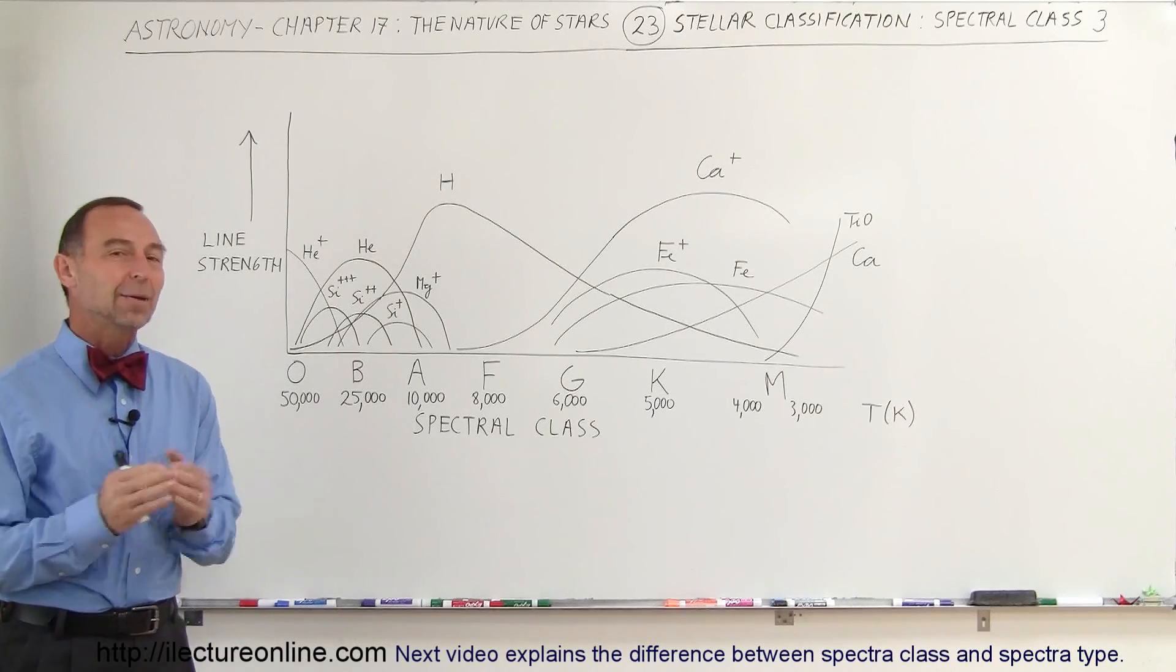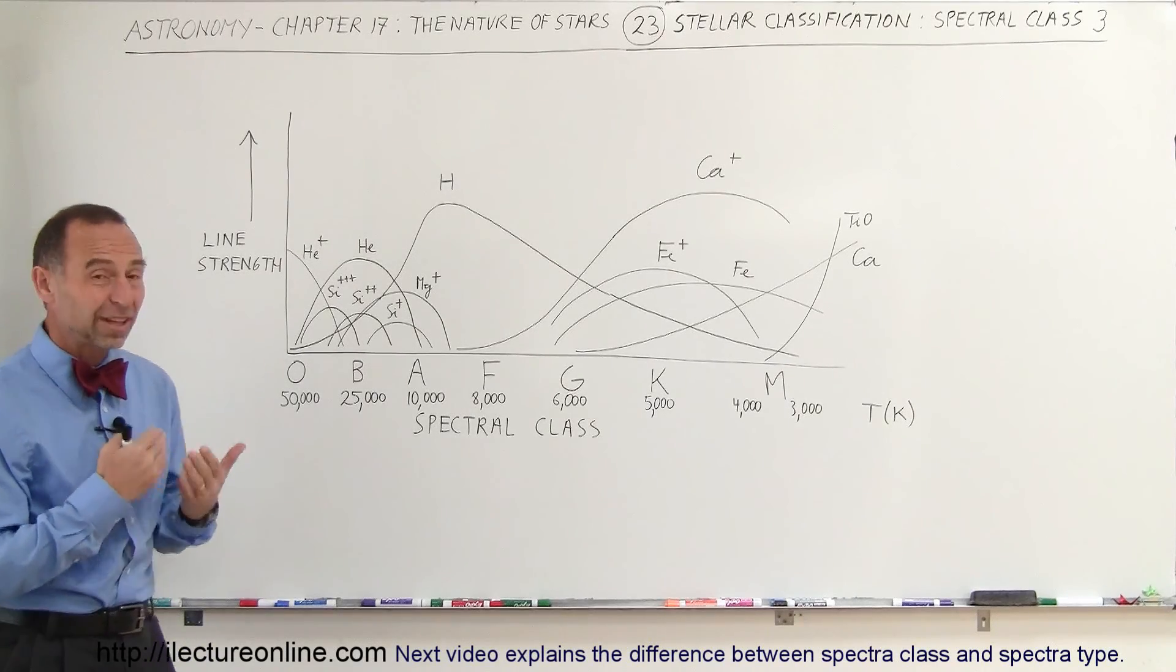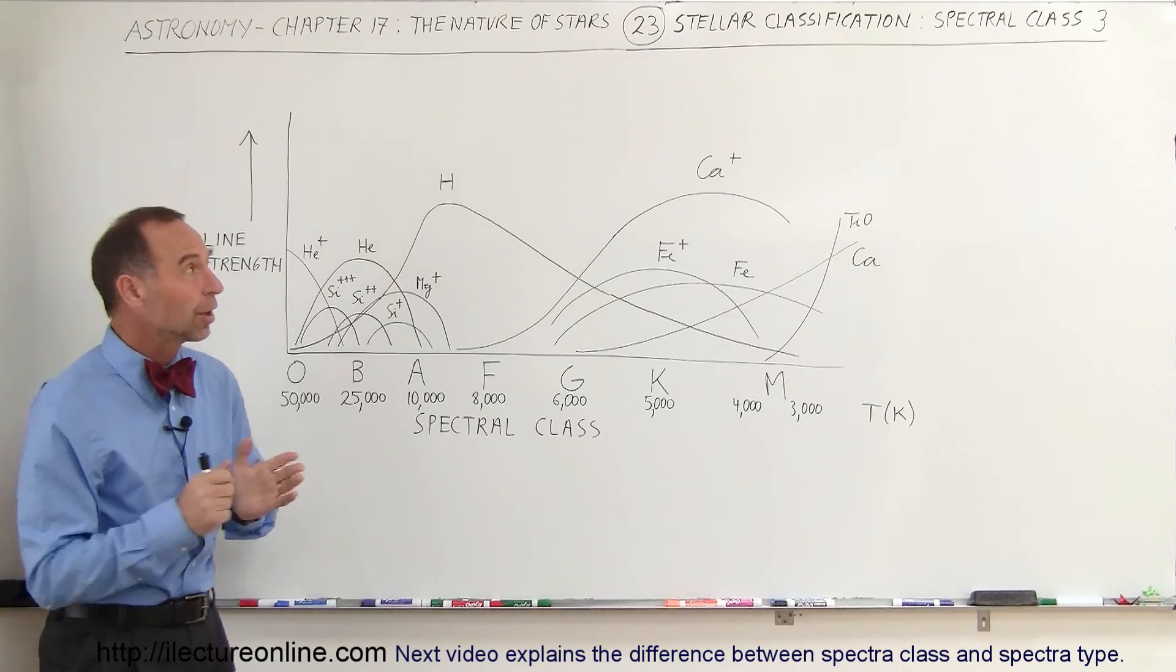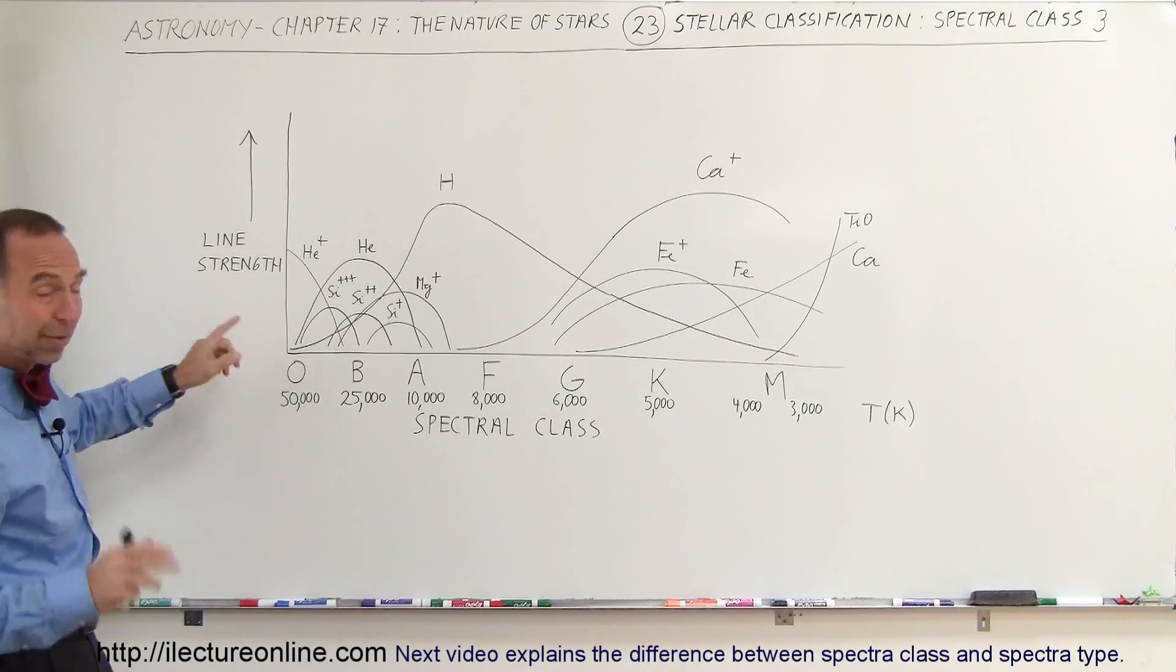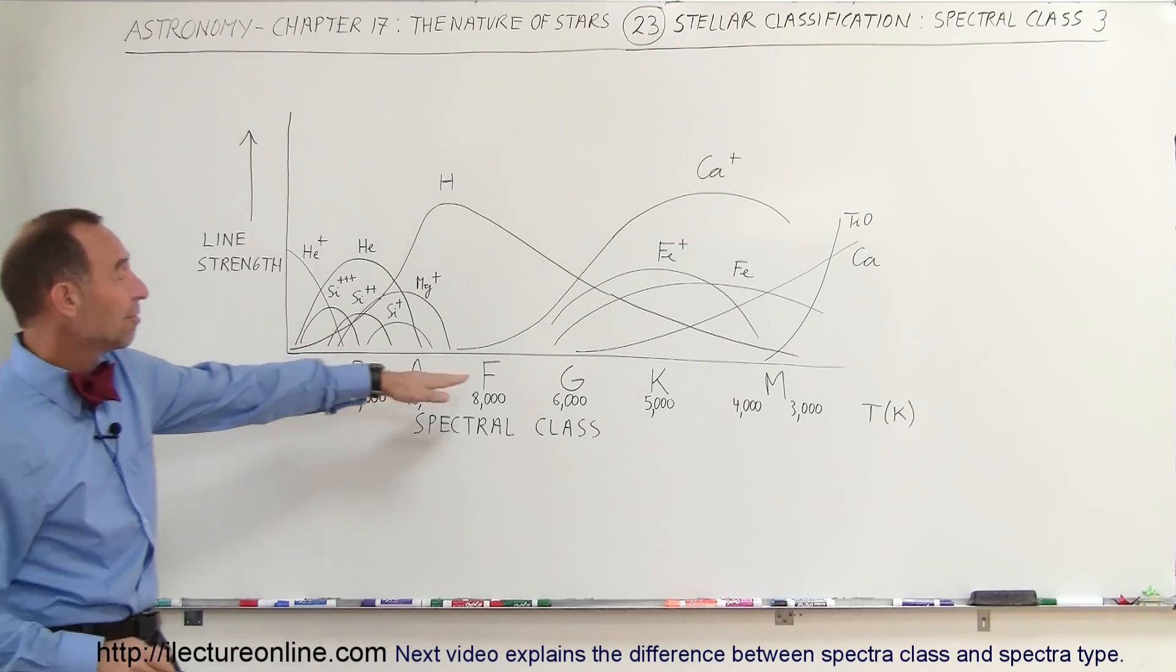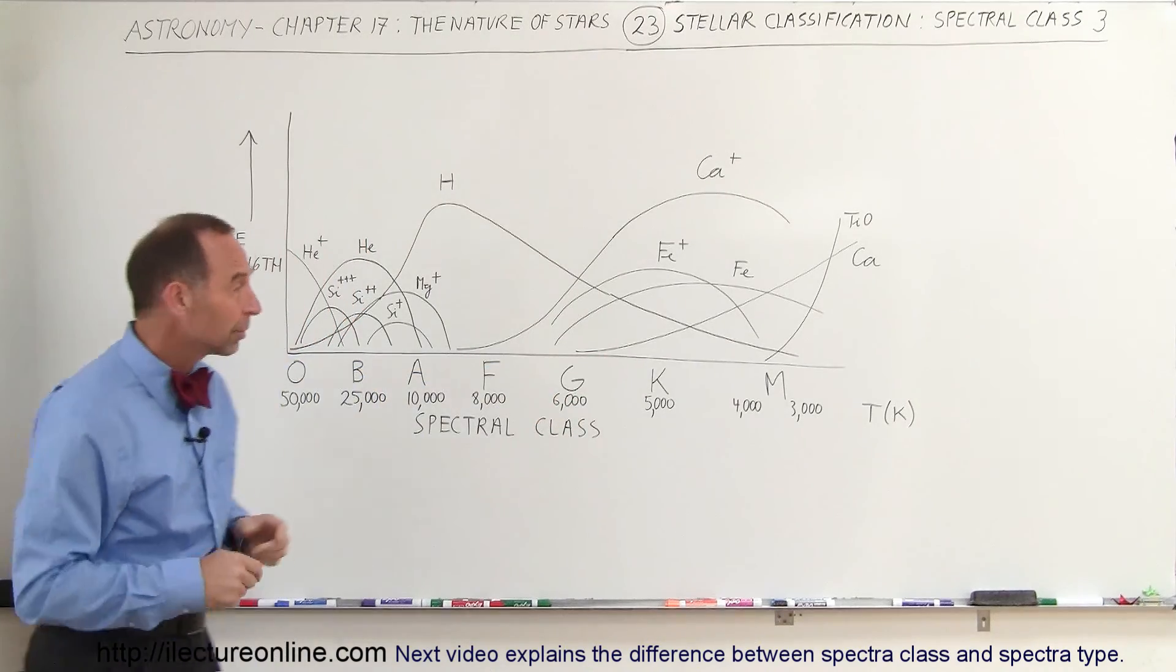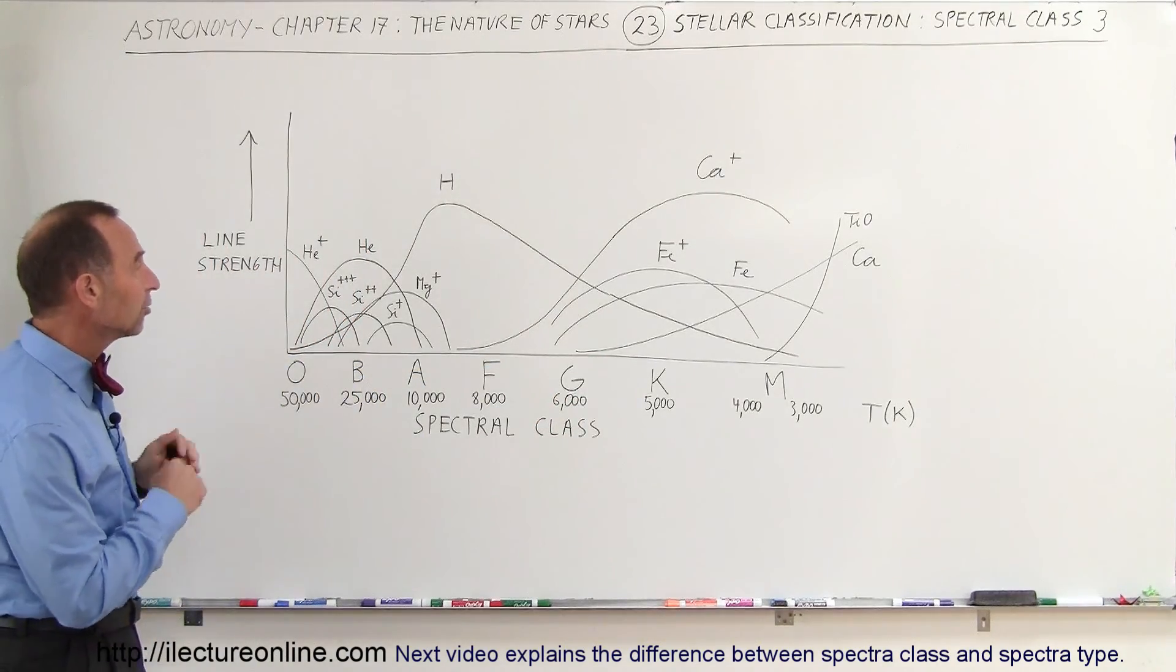Welcome to Electronline, and now let's take another look at what we call stellar classifications, especially when we talk about spectral class. The spectral classes are represented by the letters OBAFGKM. Those are the typical classifications for the stars.